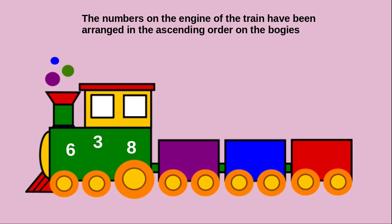Now we will see some examples. They have given 3 numbers: 6, 3, 8. We are going to arrange these numbers in ascending order in the train engine. Ascending order means smallest number to greatest. Here, 3 is the smallest number, so we arrange 3 first. Comparing 6 and 8, the smallest is 6, so we arrange 6 next. At last, 8 is remaining, so we arrange 8. Now we have arranged these numbers in ascending order.